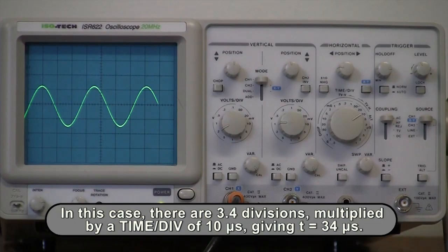In this case, there are 3.4 divisions, multiplied by a time per division of 10 microseconds, giving a period of 34 microseconds.